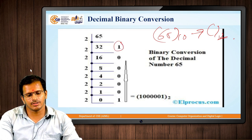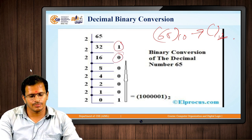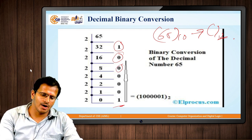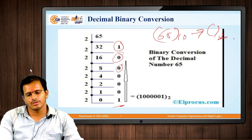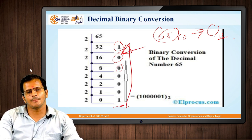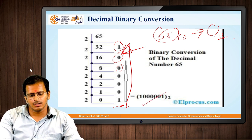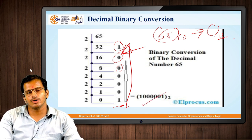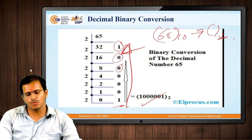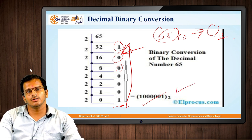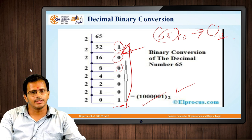Then 2 into 16 is 32, so the remainder is 0. Whatever remainder values we obtain, we take them from downward to upward. The value obtained is 1, 0, 0, 0, 0, 1 — here is the process of how the conversion of decimal to binary is done.